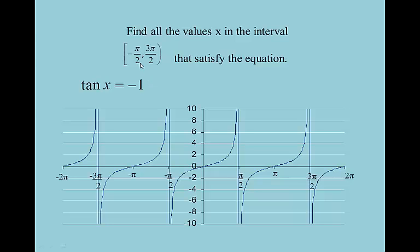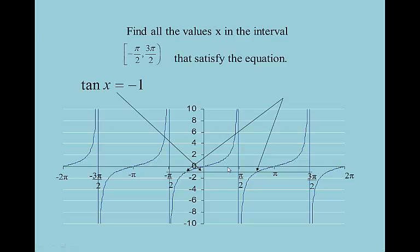Same range, negative π/2 to 3π/2: when is tangent x = negative 1? You should be thinking 45-degree angles. We found a solution here and a solution here — the two solutions between negative π/2 and 3π/2. That angle is negative π/4, and this angle is 3π/4. Had we said between 0 and 2π, you'd have found 3π/4 and 7π/4, but 7π/4 is out of that range. This angle is coterminal with 7π/4. So the answers are negative π/4 and 3π/4.